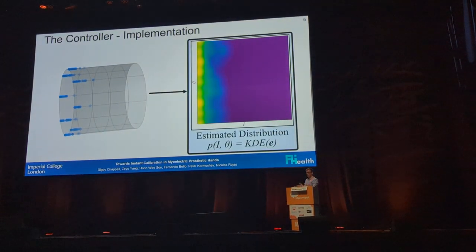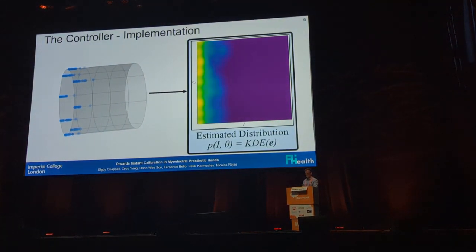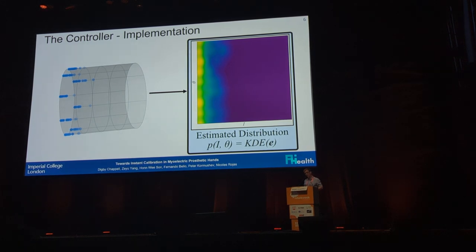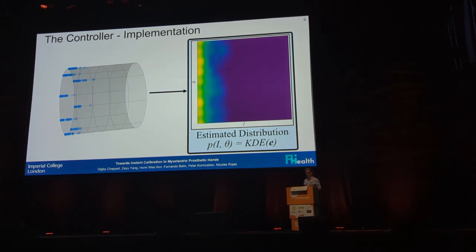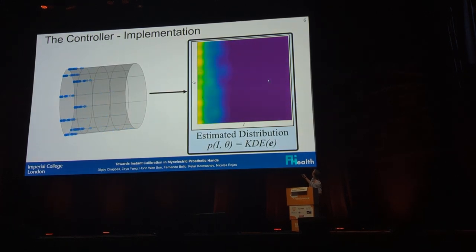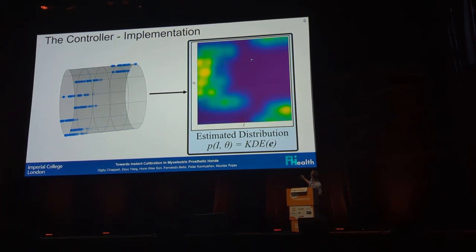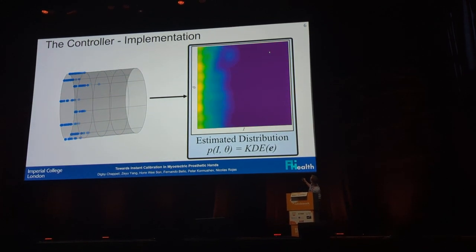What we want to do is estimate a distribution that produced the signals. We're using kernel density estimation — we used a kernel that wraps in one dimension, so around the arm, and is limited by the center value, truncating the other dimension. It produces something that looks like this — it wraps around the arm.